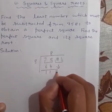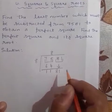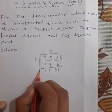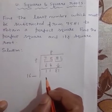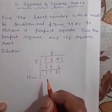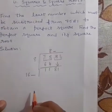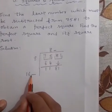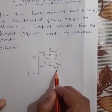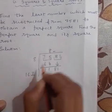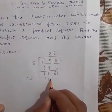Bring down the next pair. Our new dividend is equal to 1,181. Now double the quotient here, that is 16 with a blank on its right. Guess the largest possible digit to fill the blank, which also becomes the new digit in the quotient, such that when the new digit is multiplied by the new divisor, the product is either less than or equal to 1,181. Our required number is 7. We multiply 167 by 7 and get 1,169.